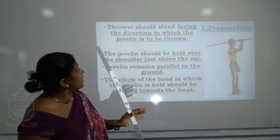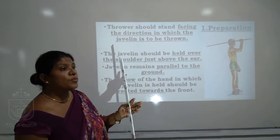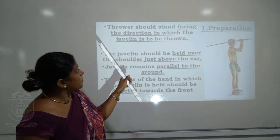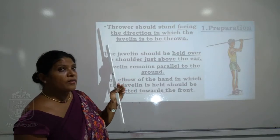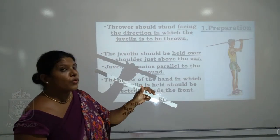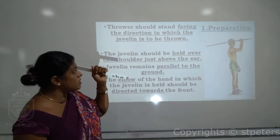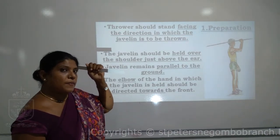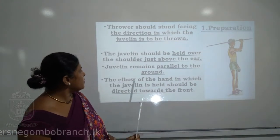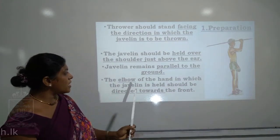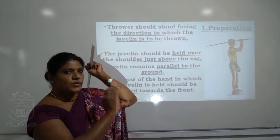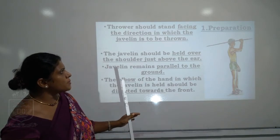First: preparation. The thrower should stand facing the direction in which the javelin needs to be thrown. The javelin should be held over the shoulders, just above the ear, and remains parallel to the ground. The elbow of the hand holding the javelin should be directed towards the front. These are the steps to be followed under preparation.